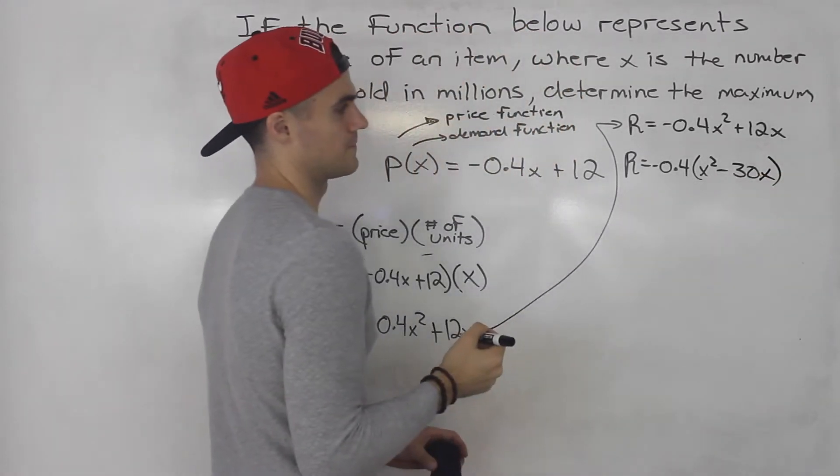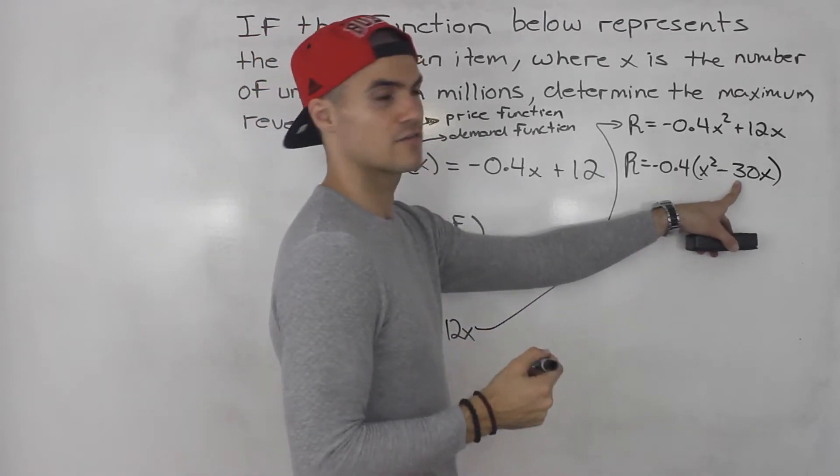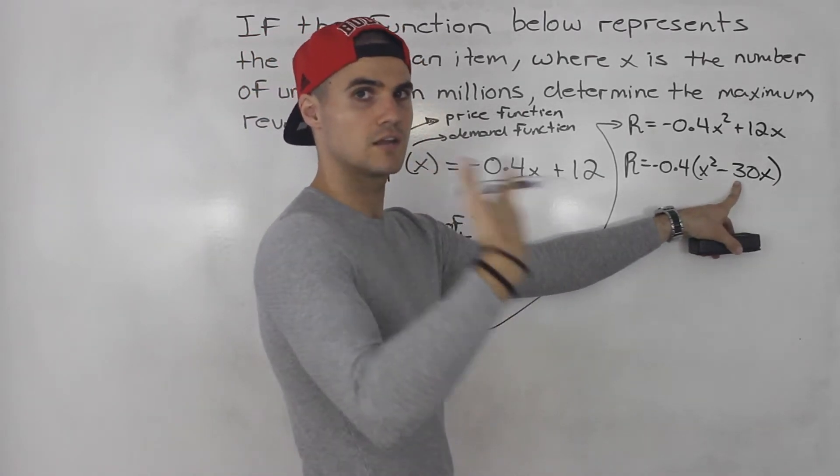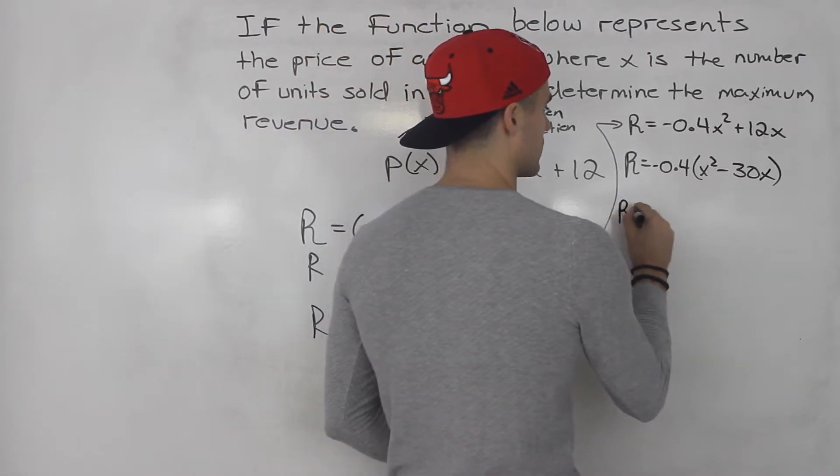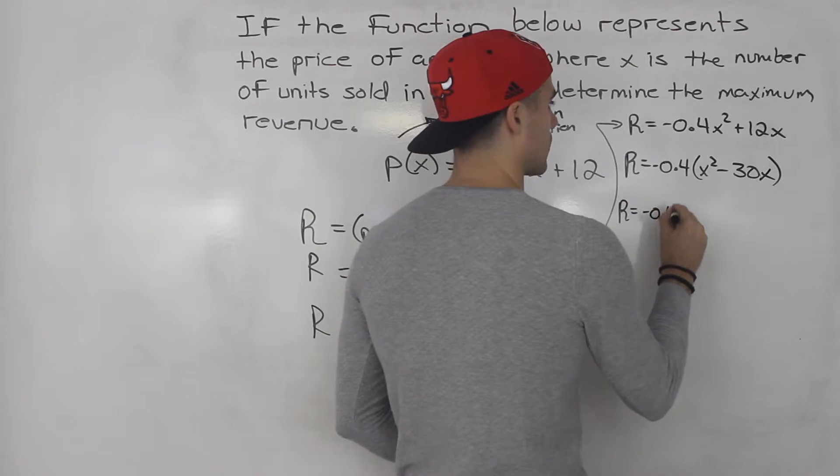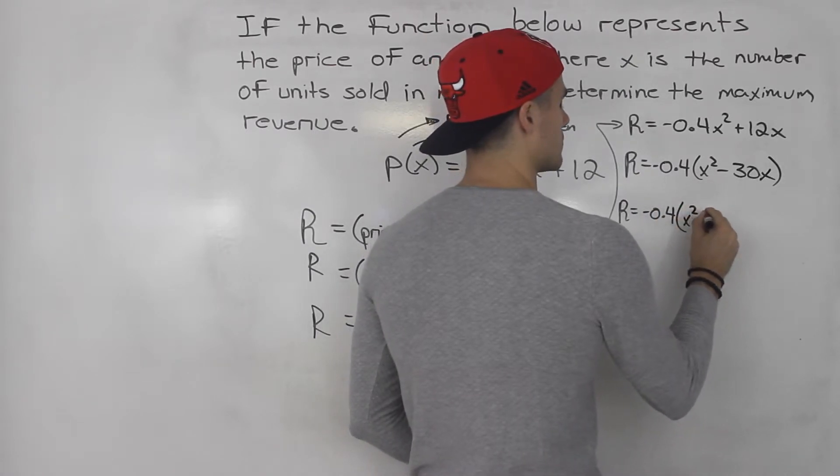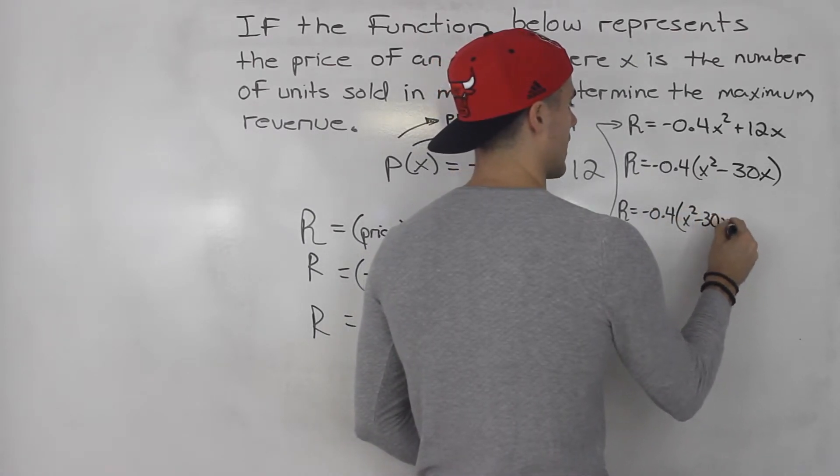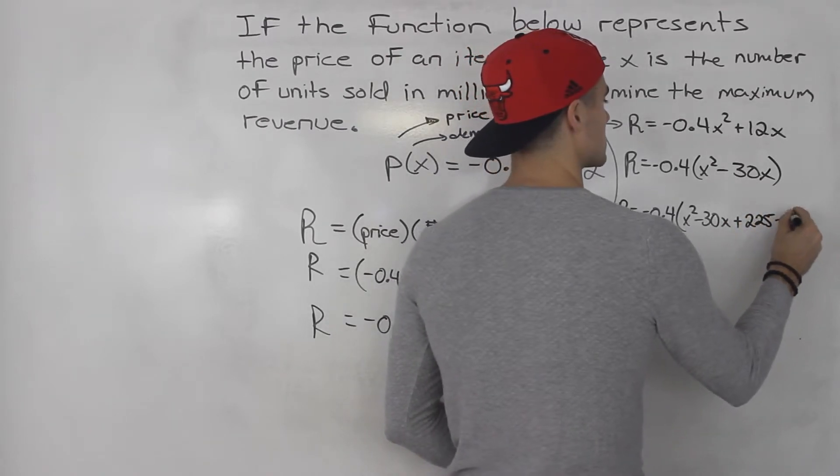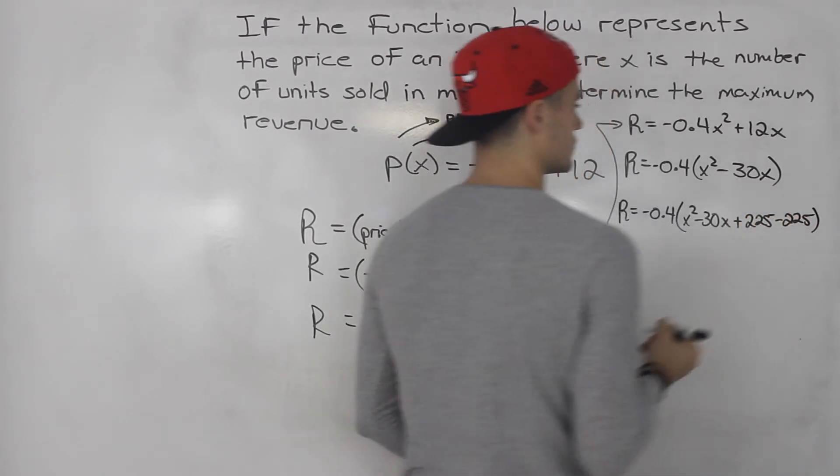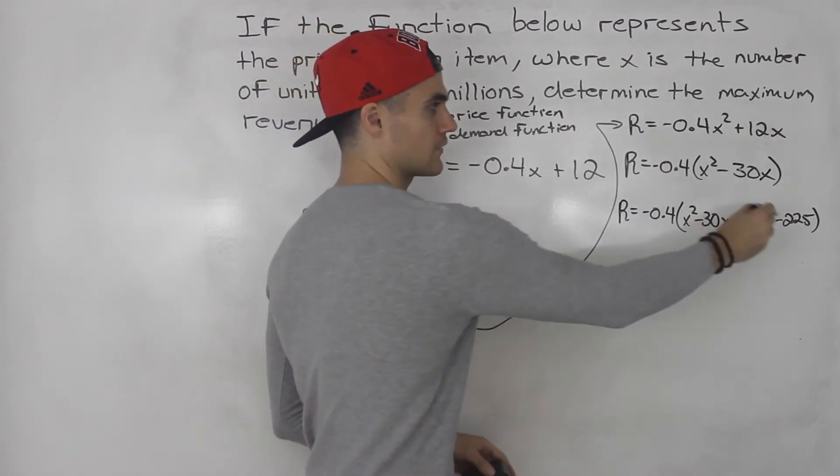So then we would take negative 30 divided by 2, negative 15, square it, that gives us 225.